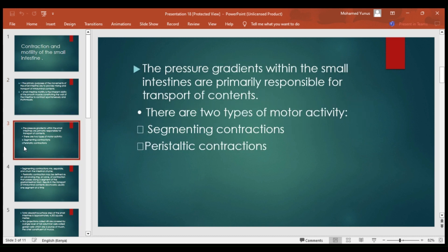The pressure gradients within the small intestine are responsible for the transport of intraluminal content. There are two types of motor activity within the small intestine: segmenting contractions and peristaltic contractions.